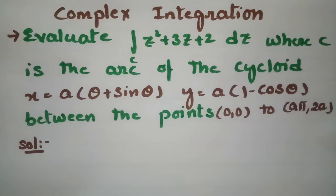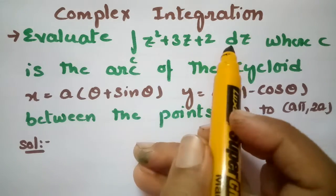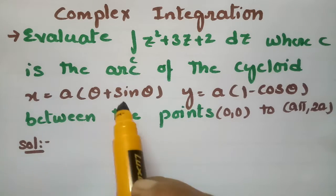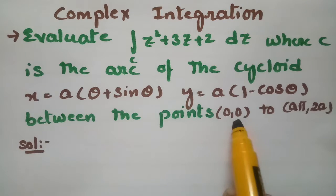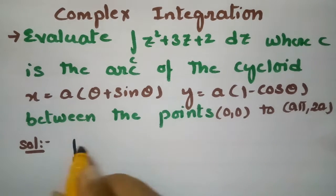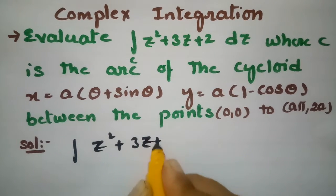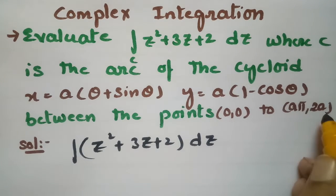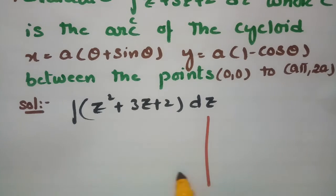This problem is from complex integration. We are going to evaluate the integral of z squared plus 3z plus 2 dz, where c is the arc of the cycloid x = a(θ + sinθ), y = a(1 − cosθ), between the points (0, 0) and (aπ, 2a).